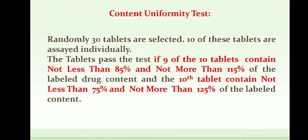The content uniformity test is carried out by randomly selecting 30 tablets, of which 10 are assessed individually. The tablet passes the content uniformity test if 9 of the 10 tablets contain not less than 85% and not more than 115% of the labelled drug content, and the 10th tablet contains not less than 75% and not more than 125% of the labelled content.